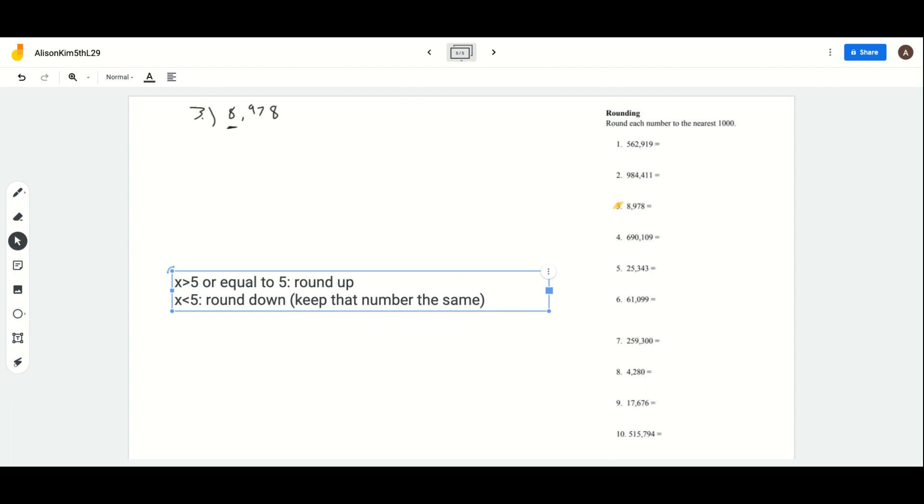This is basically a review from last time, or the last few worksheets. Since we need to round to the nearest thousands, we're going to look to the number behind it, which is 9 in the hundreds. We know that 9 is way greater than 5, so we're going to round up by 1. So 8 turns into a 9, and everything else behind it turns to 0. It's going to round to 9,000, and that's our final answer.